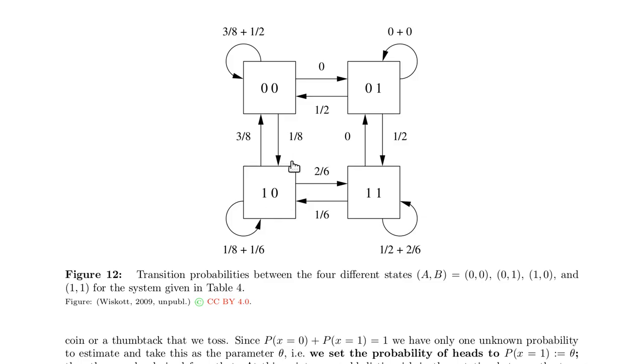Now if you look at this, first of all you can verify that the state 0, 1 is impossible. But you also see that the transition from the state 0, 0 to 1, 0 or 1, 1 to 1, 0 is not very likely. So we have just a chance of 1 over 6 here and 1 over 8 here.